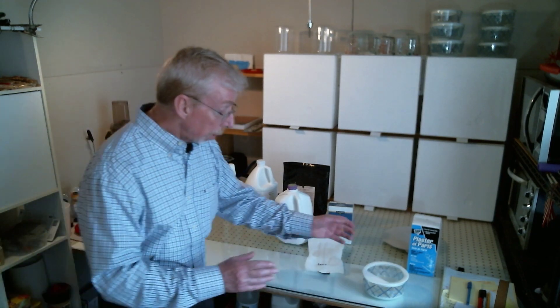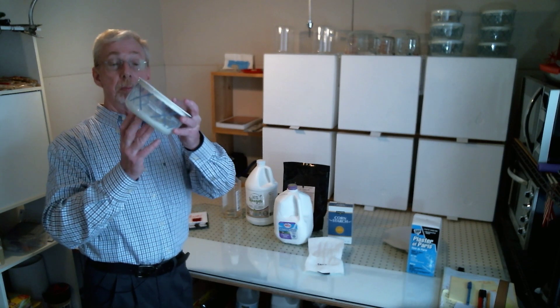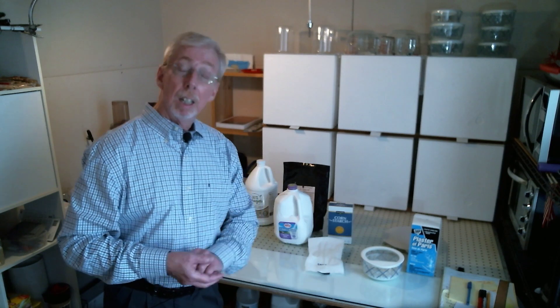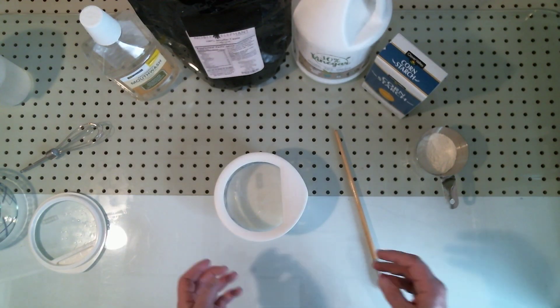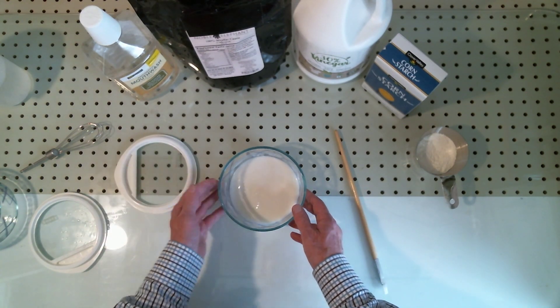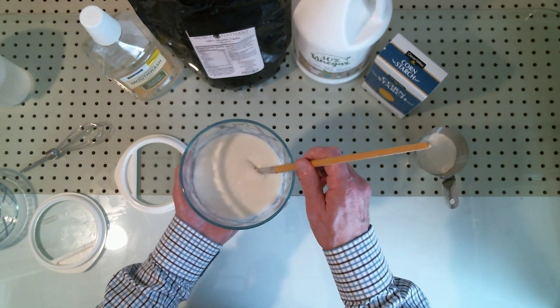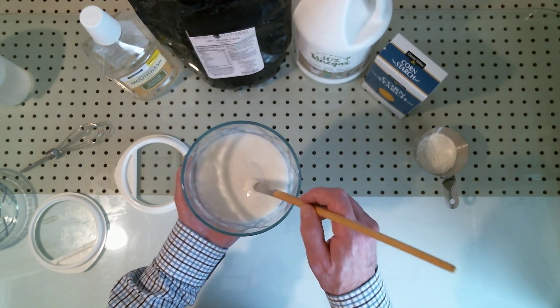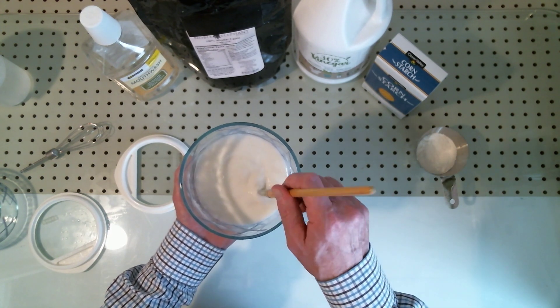What we're going to end up with is a nice thick creamy gesso. You can make it as thin as you like, but I like the gel. And here's a look at what we're going to end up with at the end of this. Very nice milky creamy looking gel that stays on the brush very nicely. Now, it's a bit translucent now, but it will dry a solid white.